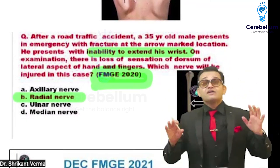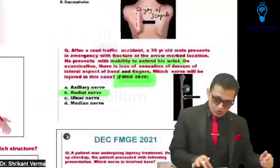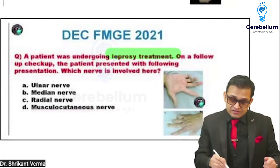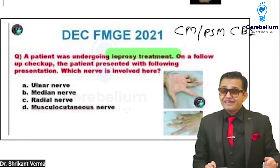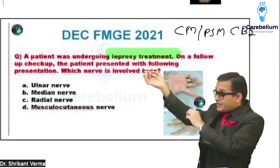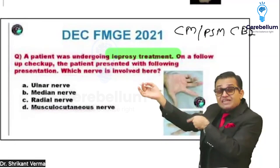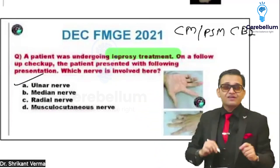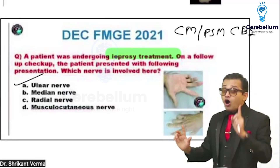The same concepts are asked in INI-CET and NEET-PG with a little more twisting. In leprosy, Mycobacterium leprae involves the skin causing depigmentation, sweat gland damage, and hair follicle loss. It then penetrates deeper and involves nerves — the most common nerve affected is the ulnar nerve, which causes ulnar claw hand.